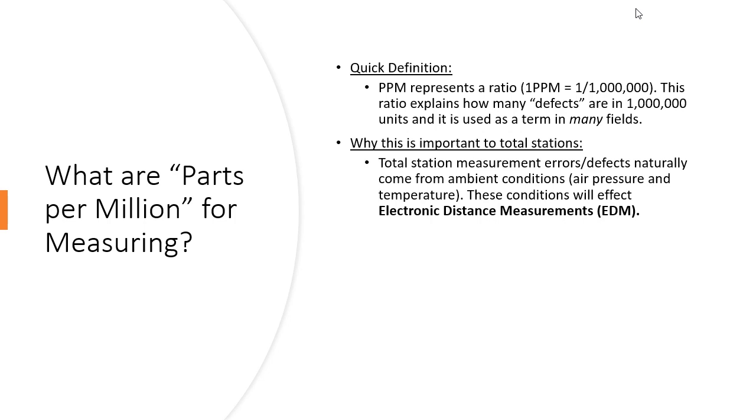Total station measurements have errors and defects that naturally come from your ambient conditions. All ambient conditions means are air pressure and temperature of where you're stationed and where you're laying out.